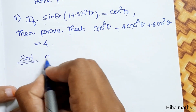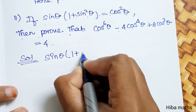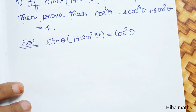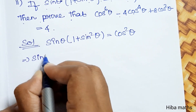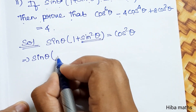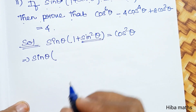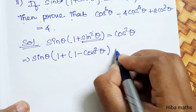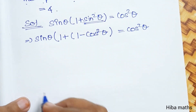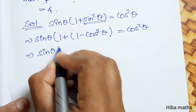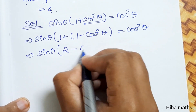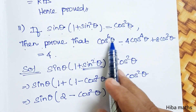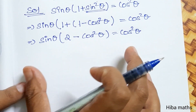Given: sin θ(1 + sin²θ) = cos θ. For this proof we derive that sin²θ = cos²θ. Then, from sin²θ − cos²θ = cos²θ, we work toward showing cos⁴θ will appear on both sides.